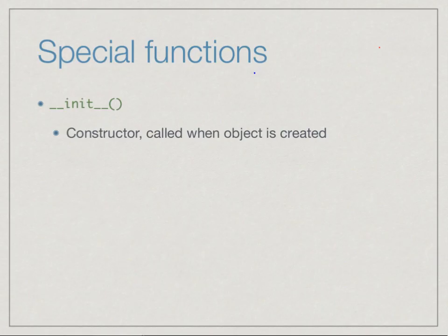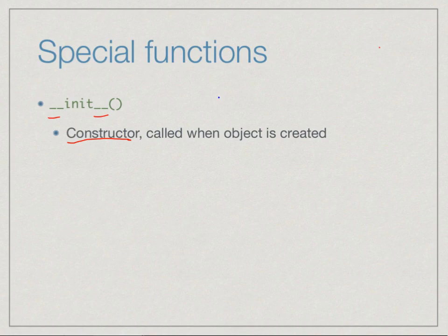The function init clearly looks like a special function because of the double underscores on either side. Python interprets init as a constructor — when we call Point(5, 4), this implicitly calls init, which sets up self dot x and self dot y so the internal representation of the point is initialized correctly.